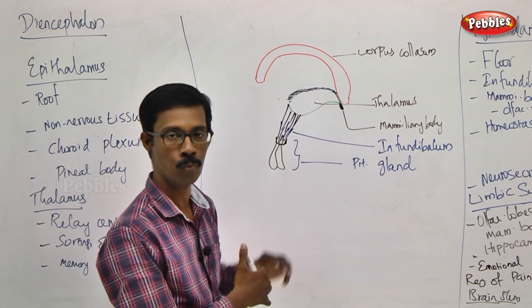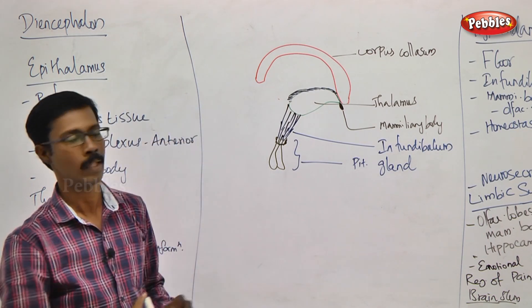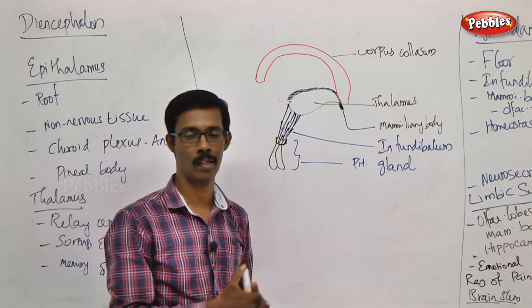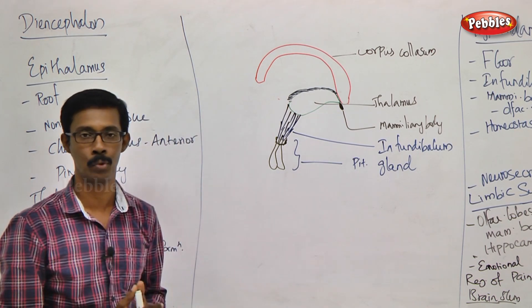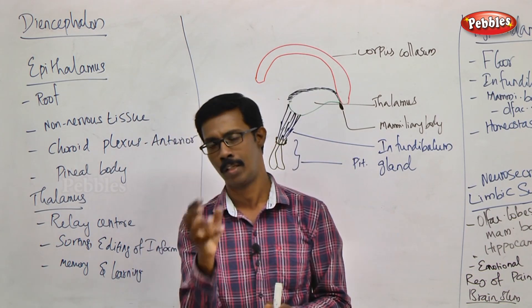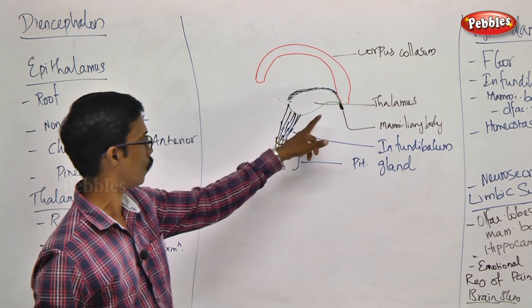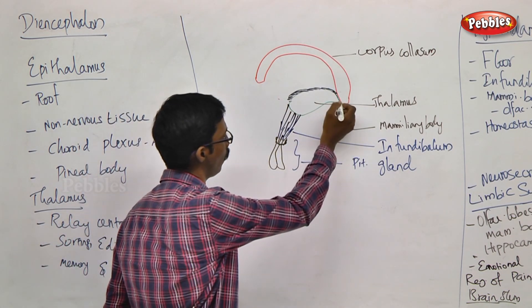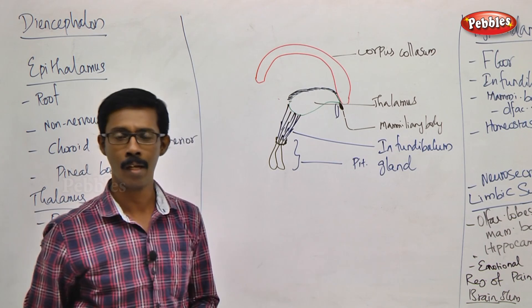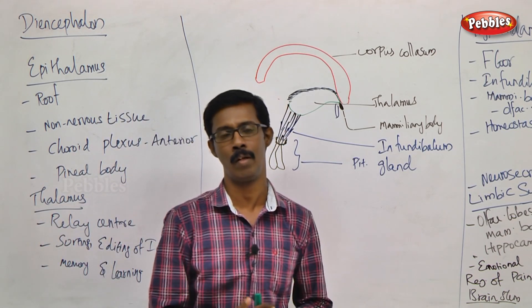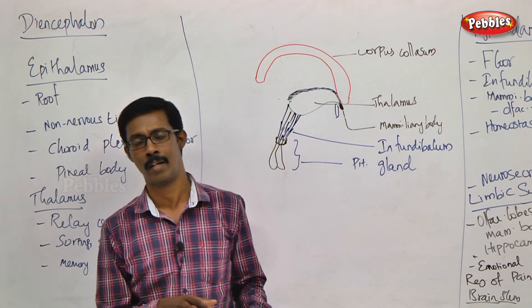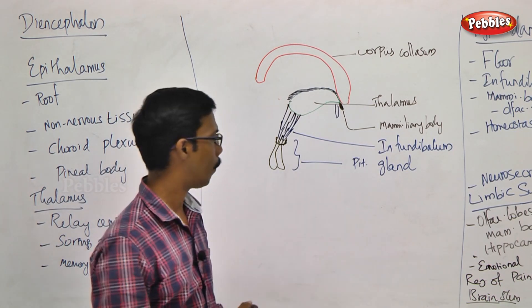The point is that Epithalamus is going to form the roof of the particular thalamus — that is why it is called Epithalamus. It contains nervous tissues, only the blood supply — that is vascular tissue. That is why it is called Choroid Plexus. The Anterior Choroid Plexus is a small finger-like projection. This projection relates to body temperature and regulatory control, and that is the pineal body.